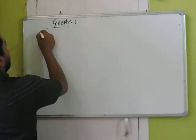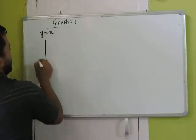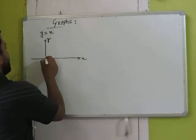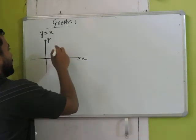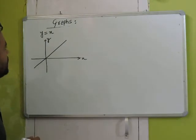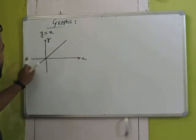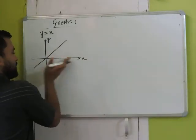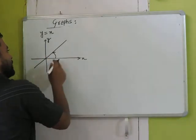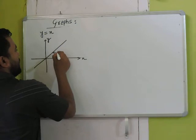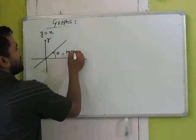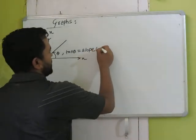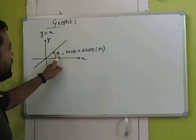Let's start with the simplest example: y equal to x. To draw it, you draw an x-axis and y-axis. If x is 0, y is 0. If x is 1, y is 1. So y = x gives you a straight line passing through the origin. In the second quadrant, x is negative so y is automatically negative. The angle from the x-axis measured anticlockwise is called theta, and tan(theta) is called the slope, denoted by m.